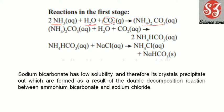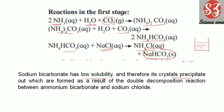The ammonium bicarbonate further reacts with CO₂ and the NaCl-saturated solution, giving ammonium chloride plus sodium bicarbonate. The sodium bicarbonate has low solubility, which is why it forms crystals and precipitates out of the solution. A precipitate forms when a product of a reaction is insoluble and settles down.